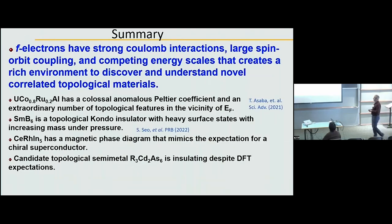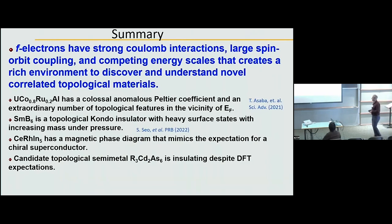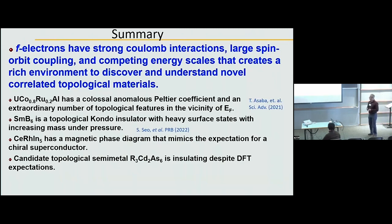In conclusion, I've presented an argument that we're looking in the right places for the intersection between correlations and topology. We have strong spin-orbit coupling, competing energy scales, and large Coulomb interactions — the right environment. I showed examples of large Berry curvature effects in a uranium ferromagnet, heavy surface states in samarium hexaboride that get heavier with increasing pressure, a CeRhIn5 magnetic phase diagram that mimics that expected for a chiral superconductor, and a mysterious lanthanum cadmium arsenic compound that is an insulator although DFT predicts it should be a metal. Thank you.